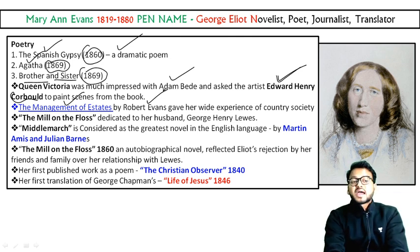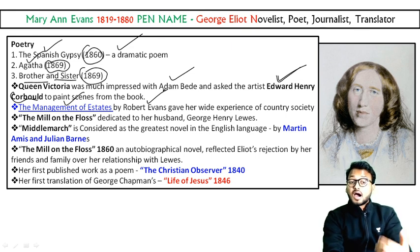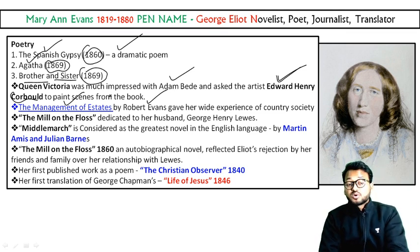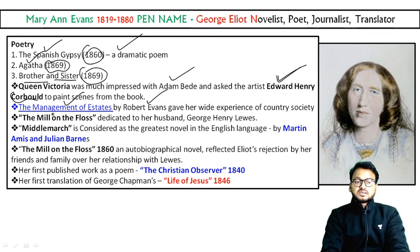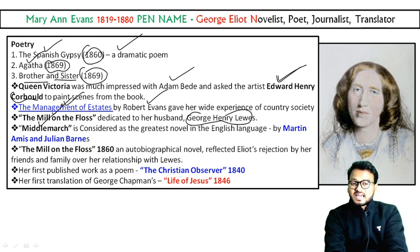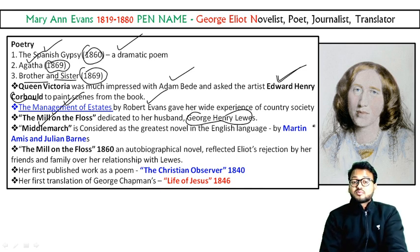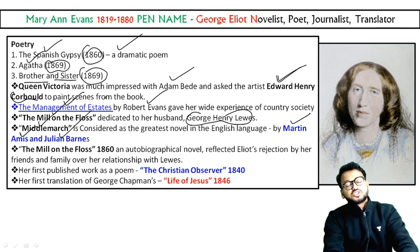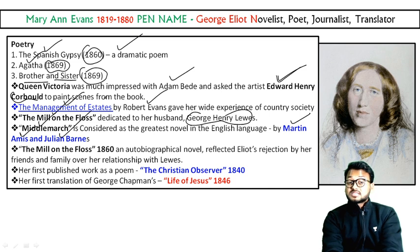One of the most impressive works she read in her lifetime was Management of Estates by her father Robert Evans. This work gave her a way to understand country society and its structure. Middlemarch is another important work and is considered one of the greatest novels in the English language by novelists Martin Amis and Julian Barnes.